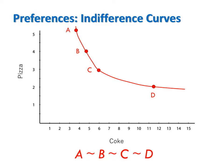Here's an example of an indifference curve. It shows all the different bundles or combinations of coke and pizza among which a consumer is indifferent. Any two bundles on this indifference curve would be ranked as equally desirable.